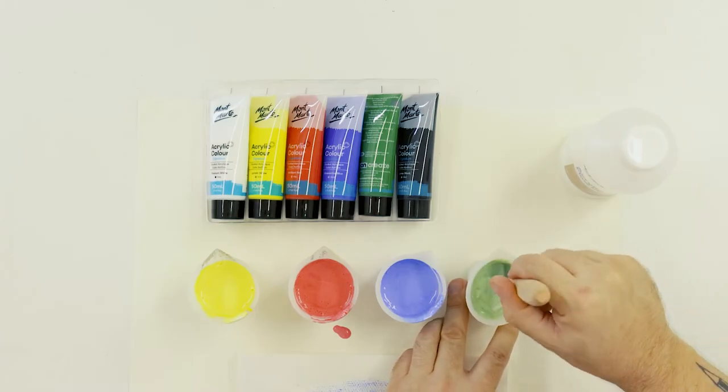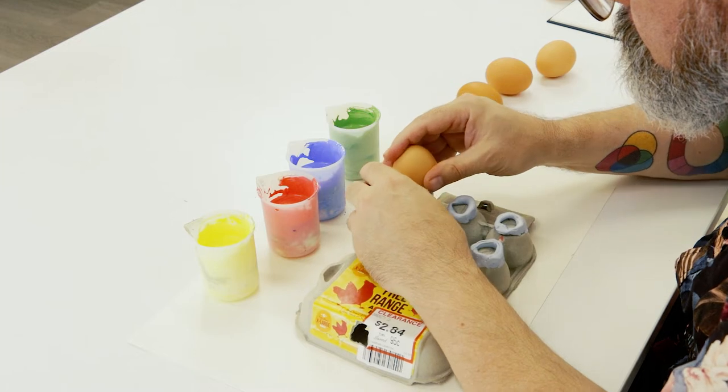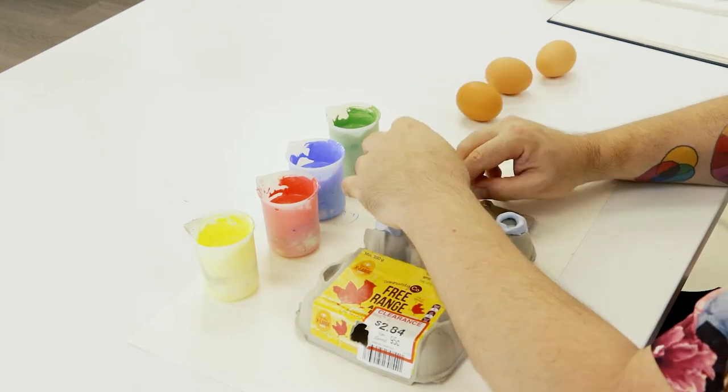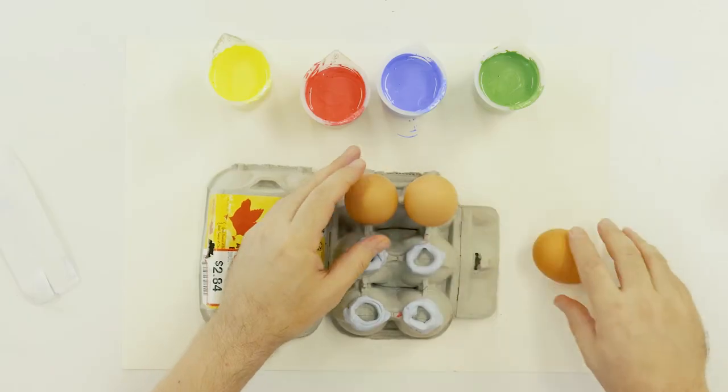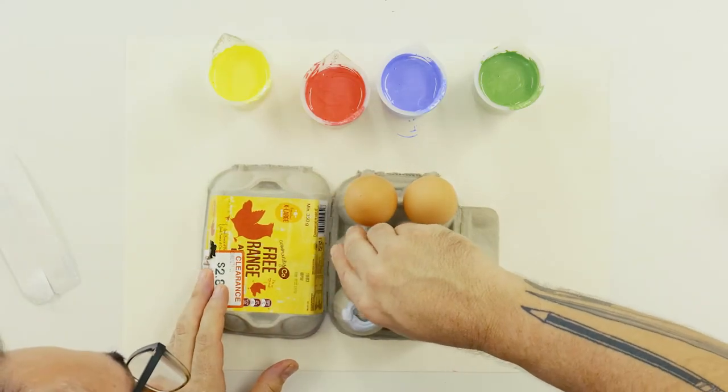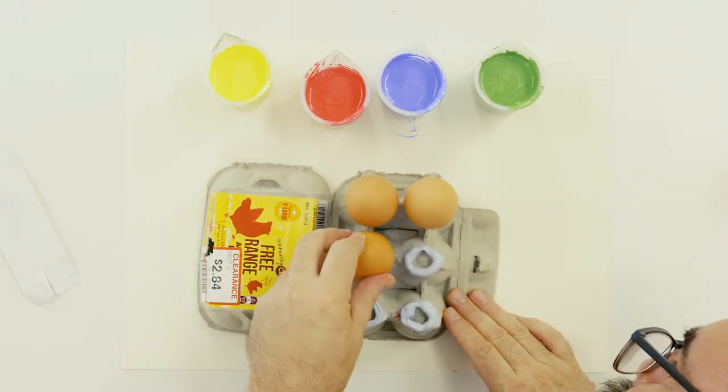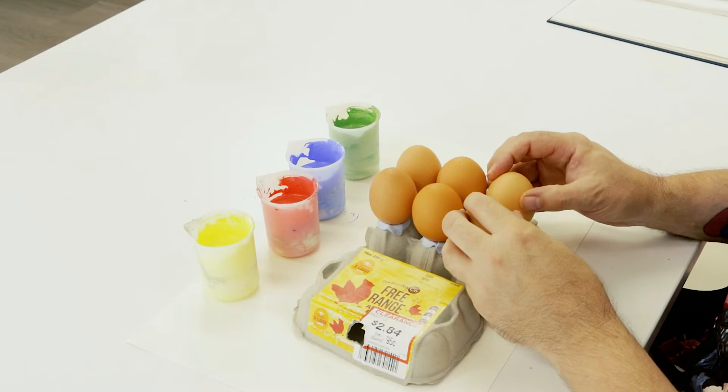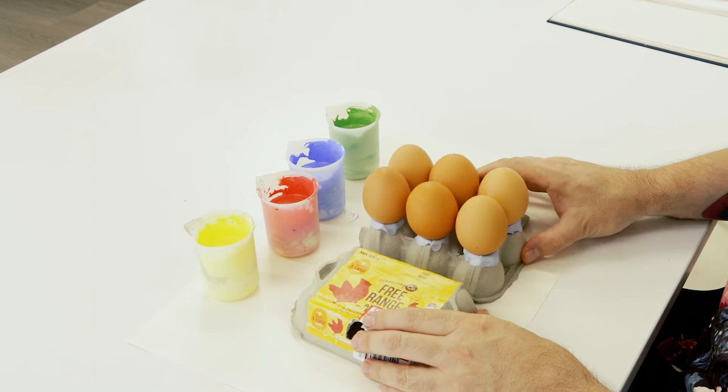Once the paint is all mixed we can let it rest and set up the eggs to accept the paint. A good way to set up the eggs to accept paint is to turn the egg carton upside down and create rings with blue tack and sit the eggs onto these. Make sure there is a little space between each egg and that the carton has some sort of protection under it. In this case a sheet of thick paper.